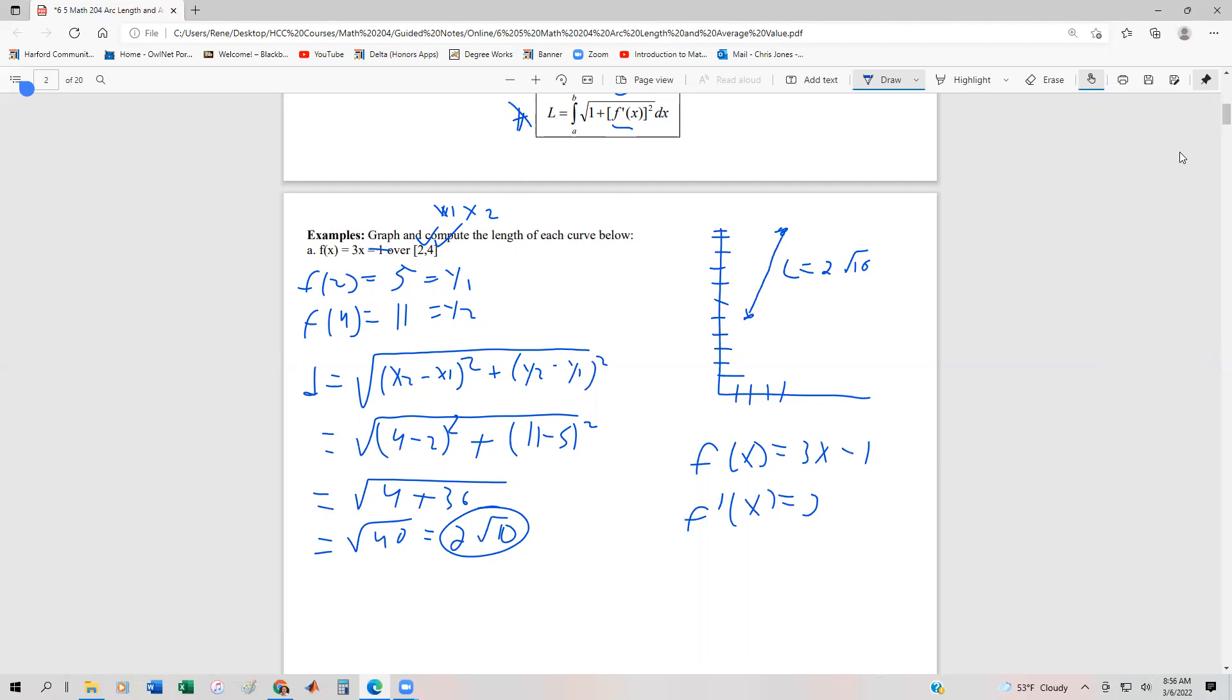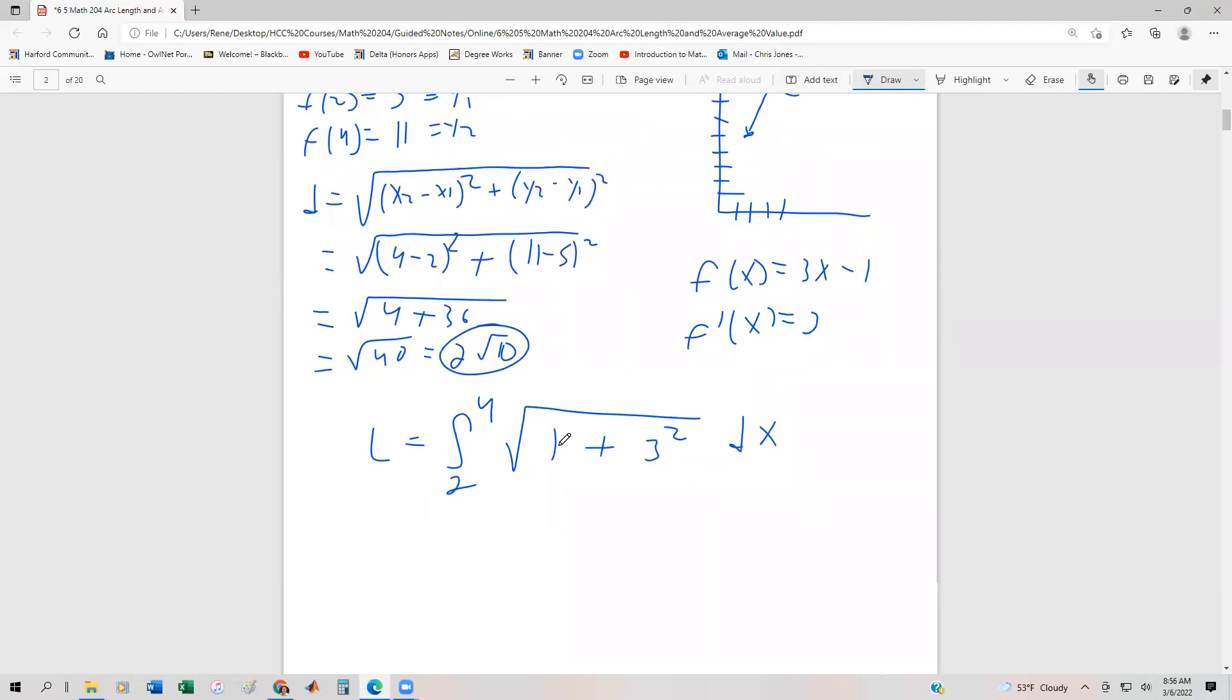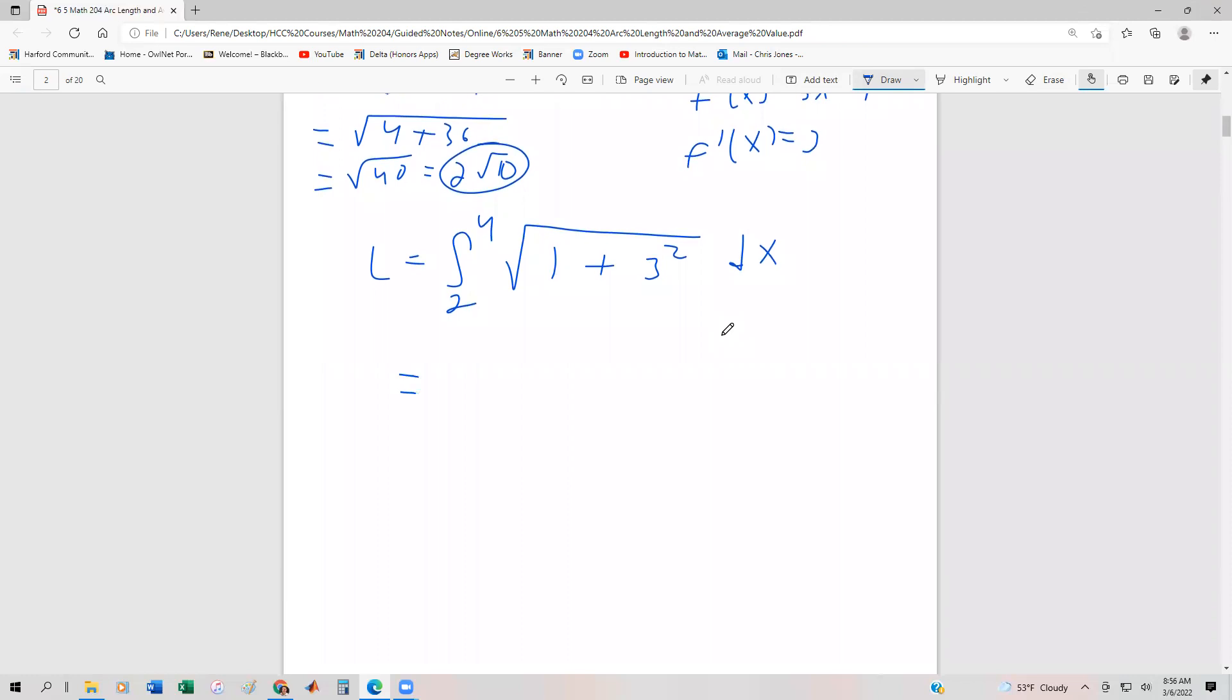And so we substitute this back in. We're going to end up with the length is going to be equal to the integral from 2 to 4, because those are our x values, the square root of 1 plus 3 squared dx. And so this clearly just turns into root 10. So this is going to be integral 2 to 4 square root 10 dx, which is going to be the same as root 10x from 2 to 4.